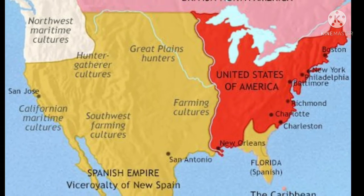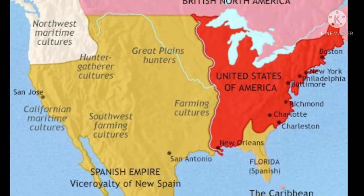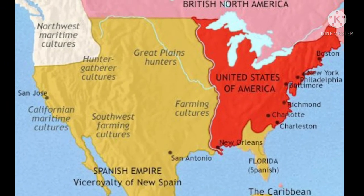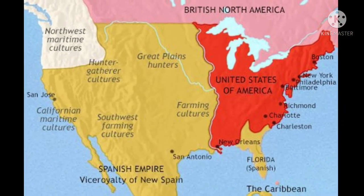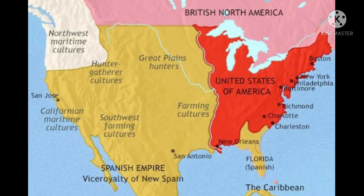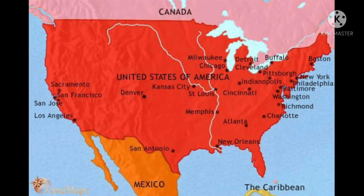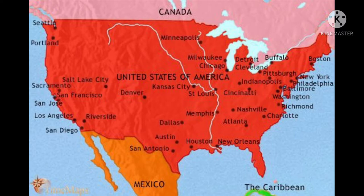During the first 70 years of its existence, the United States of America extended both its territory and influence in North America, eventually reaching the Pacific Ocean in a wave of expansionism.